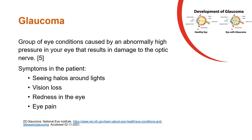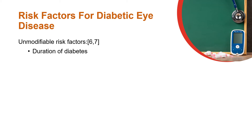Glaucoma is a group of eye conditions caused by an abnormally high pressure in the eyes, resulting in damage to the optic nerve. The symptoms of glaucoma include seeing halos around lights, vision loss, redness in the eye, and eye pain.